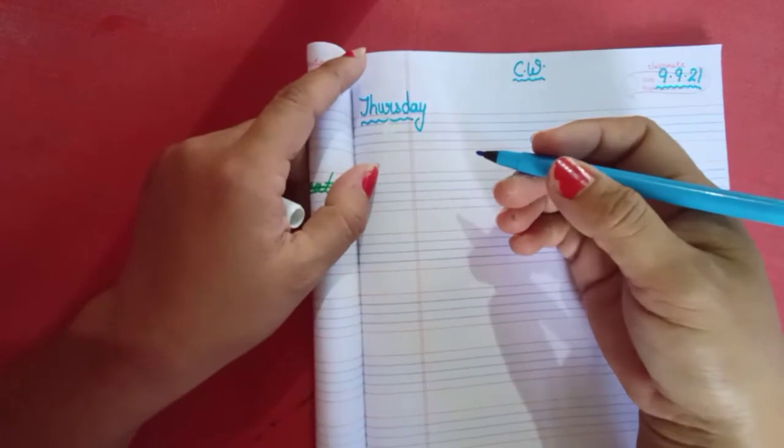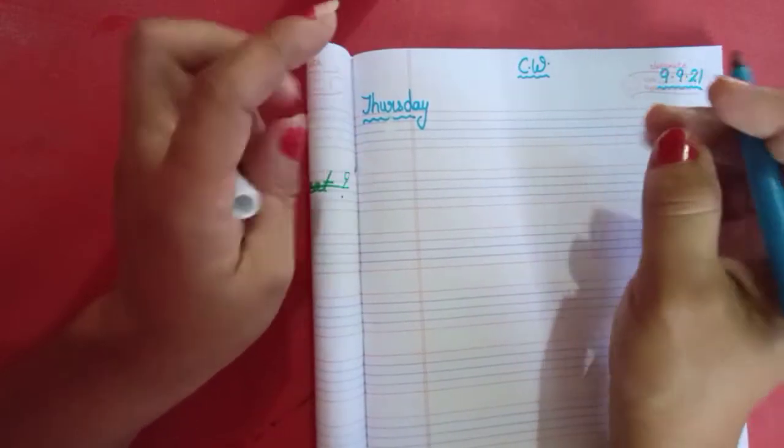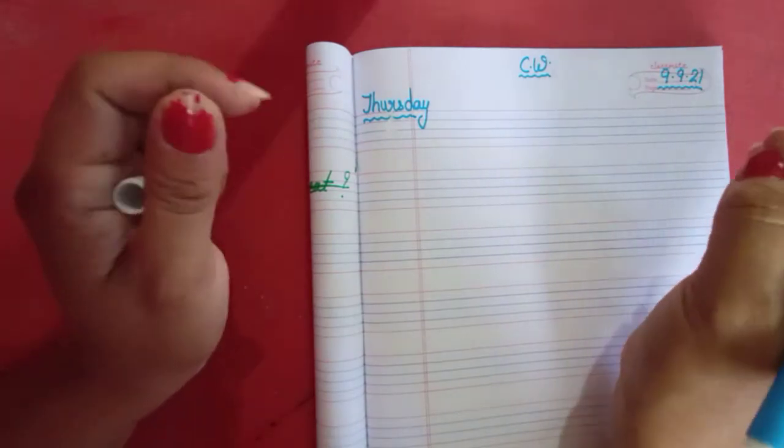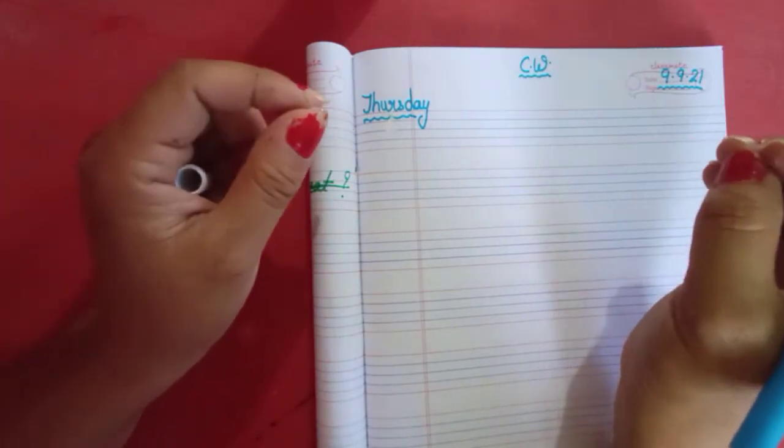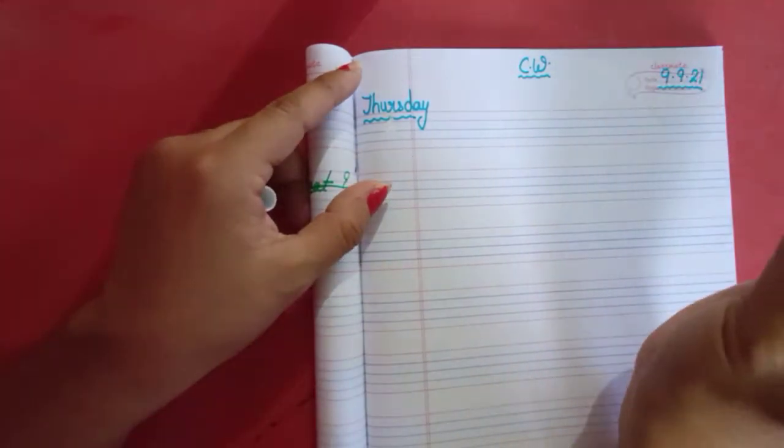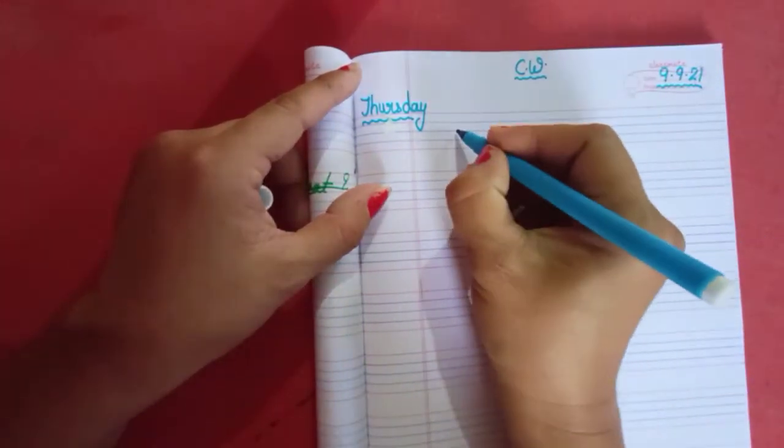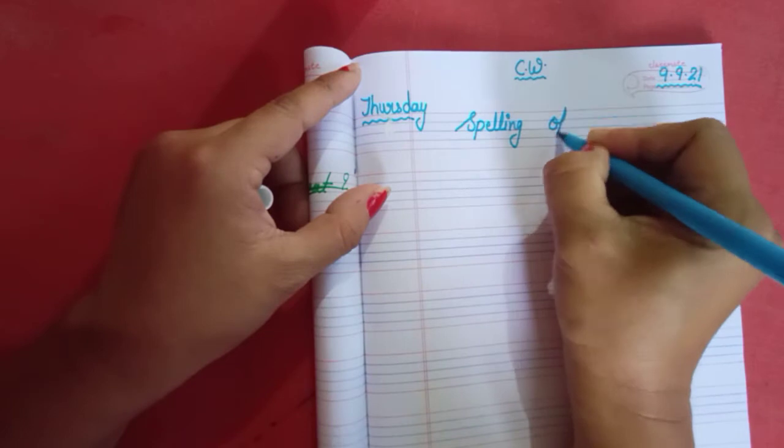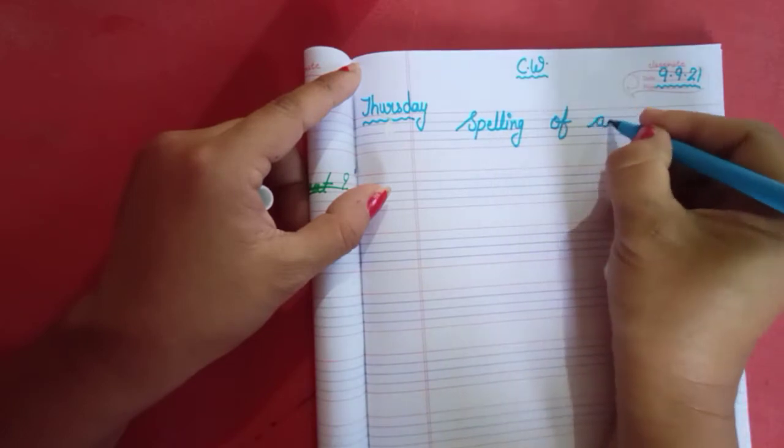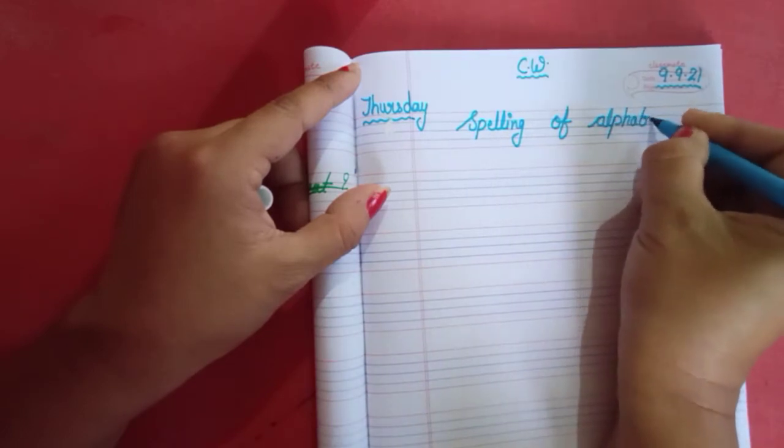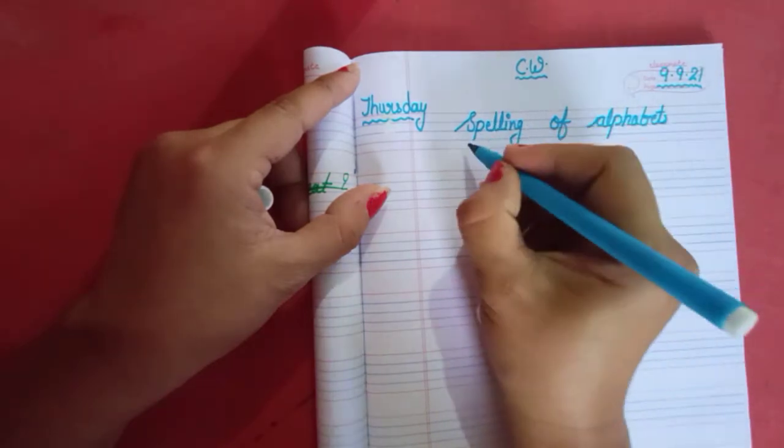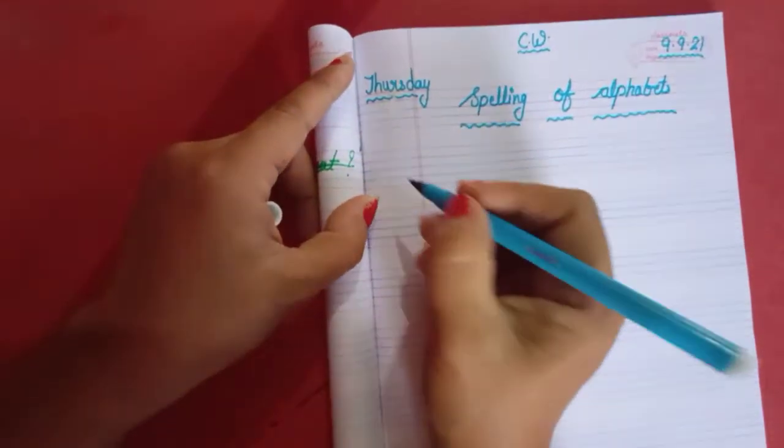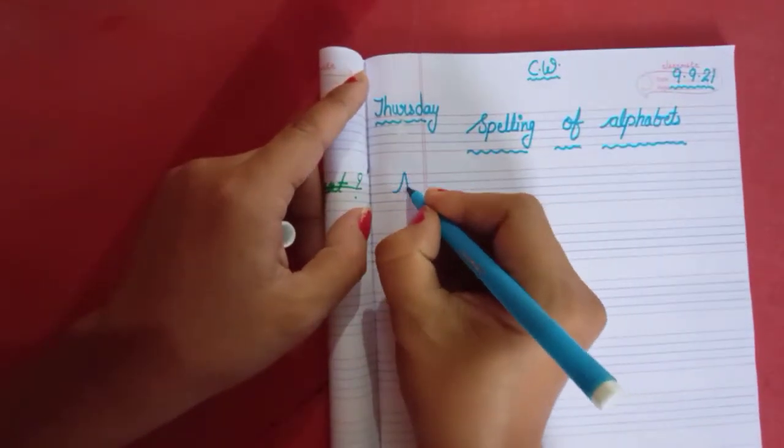Today we are going to do spelling of alphabets. We have done A to Z. A to Z tak hamne spelling alphabets ki spelling complete kar liye. Now, today we will revise one more time. A to Z. Spelling of alphabets. So, write here. Spelling of alphabets.